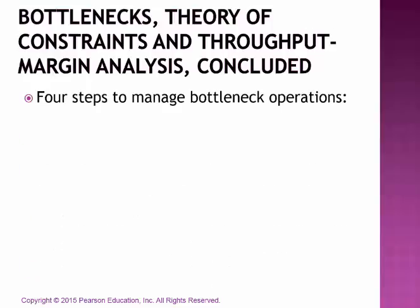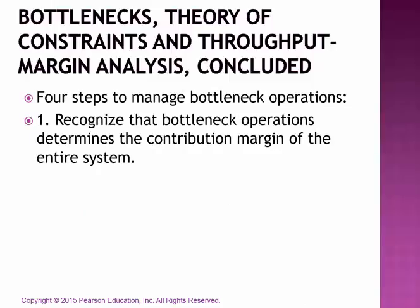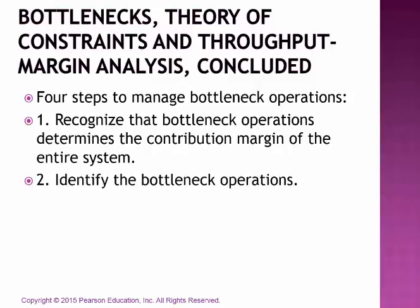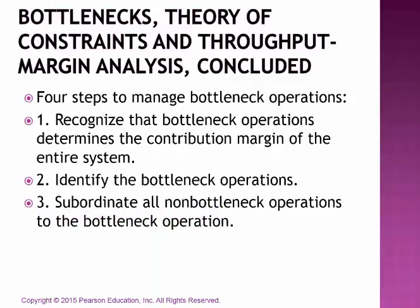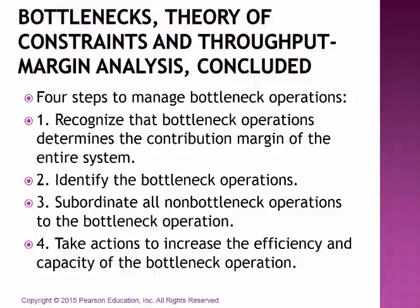There are four steps to managing the bottleneck operations. First, recognize that there is a bottleneck, and recognize that the bottleneck operation determines the contribution margin of the entire system — we can only do so much because that bottleneck is stopping us. Second, identify what the bottleneck operations are; there could actually be more than one bottleneck at a facility. Third, subordinate, or be submissive to, the bottleneck operations. Fourth, take actions to increase the efficiency and capacity of the bottleneck operations — that is the only way you are going to be able to increase your operating income or net income.